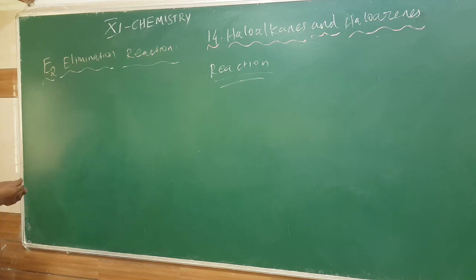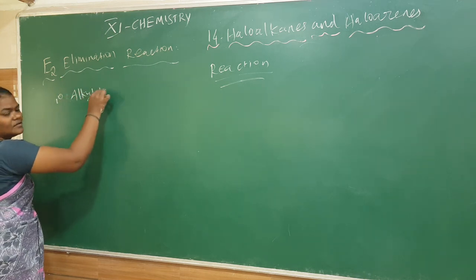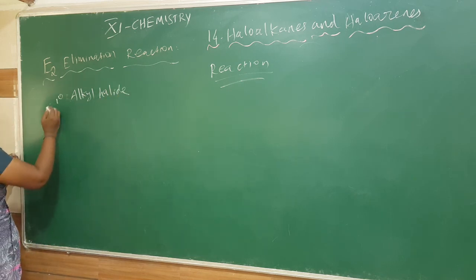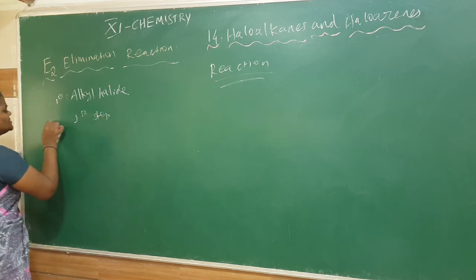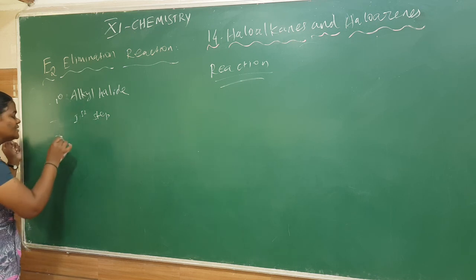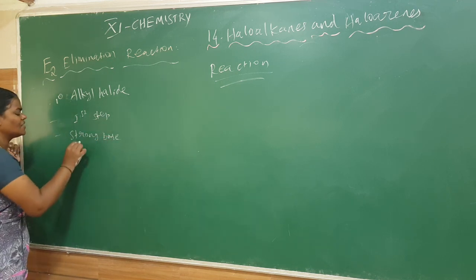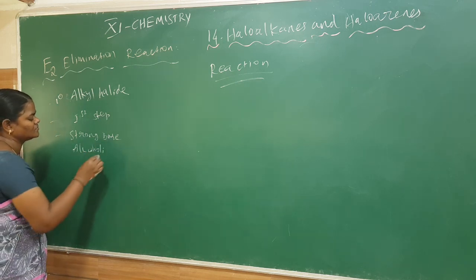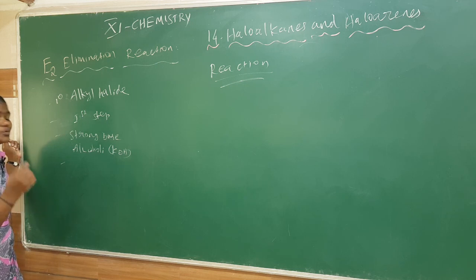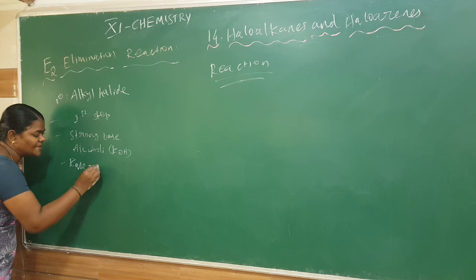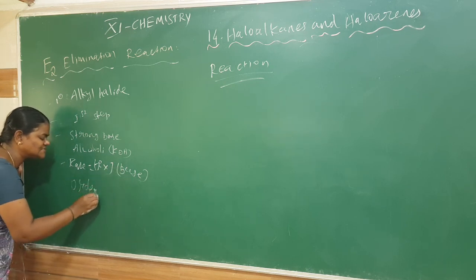The E2 elimination reaction has the following characteristics. I am taking a primary alkyl halide. It is a single-step reaction. It requires a strong base — we are taking alcoholic KOH. The rate of the reaction depends upon the alkyl halide and the base, so the order of the reaction is second order.